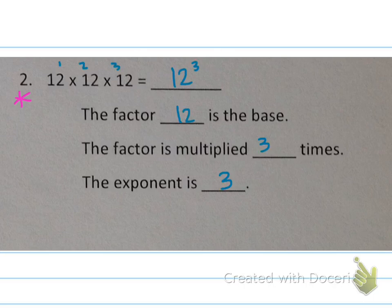Alright, so the factor 12 is the base. The factor is multiplied 3 times, so the exponent is 3. That means that our answer here is 12 to the 3rd power.